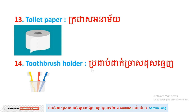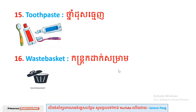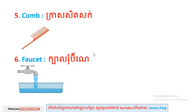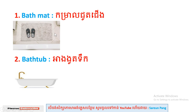Number thirteen: toilet paper. Number fourteen: toothbrush holder. Number fifteen: toothpaste. Now let's review the vocabulary with pictures.